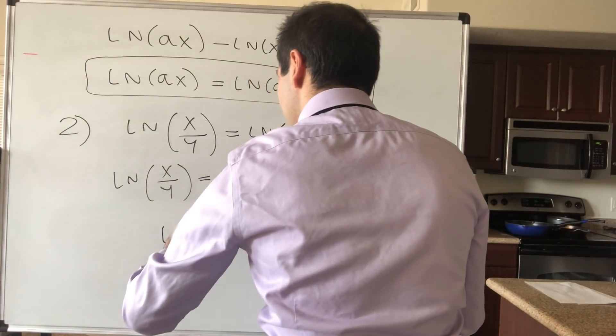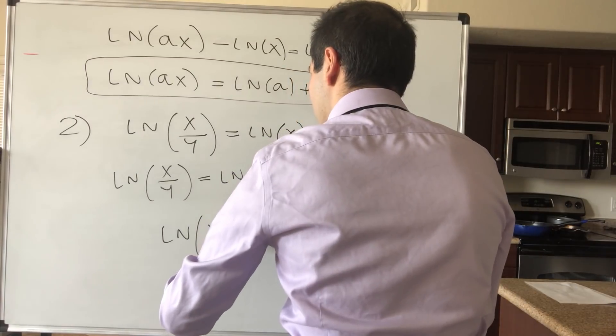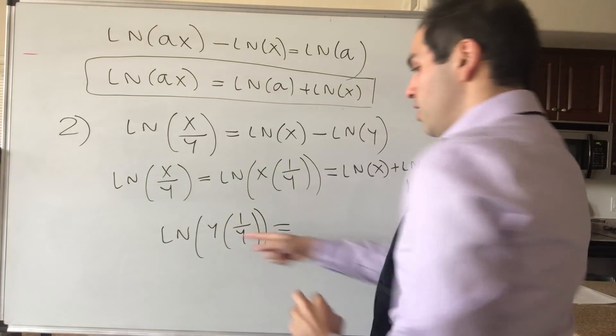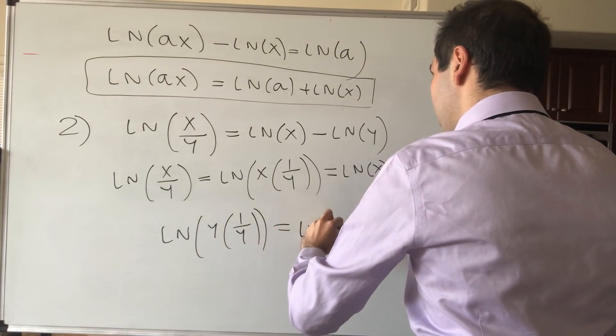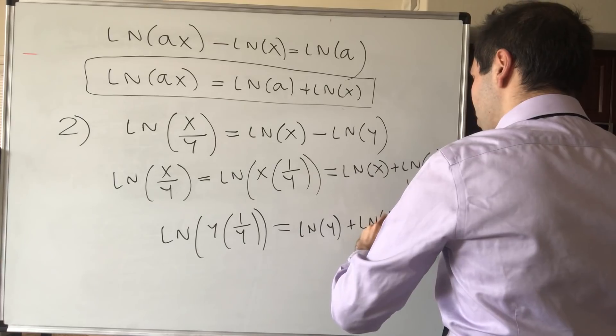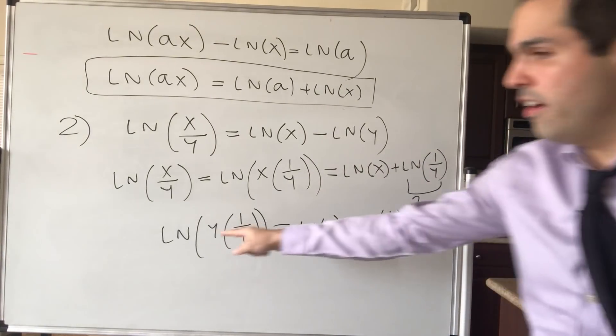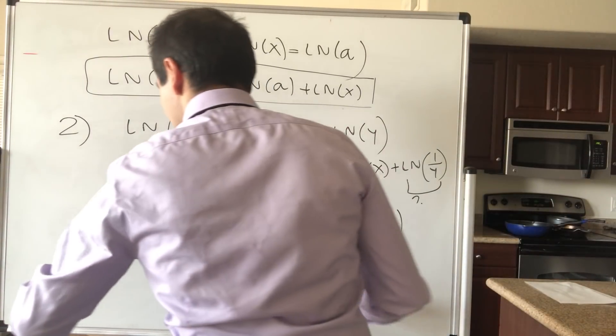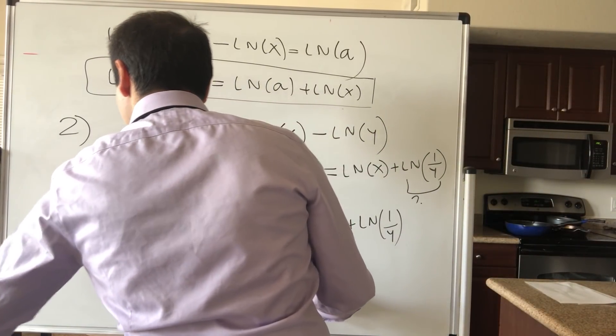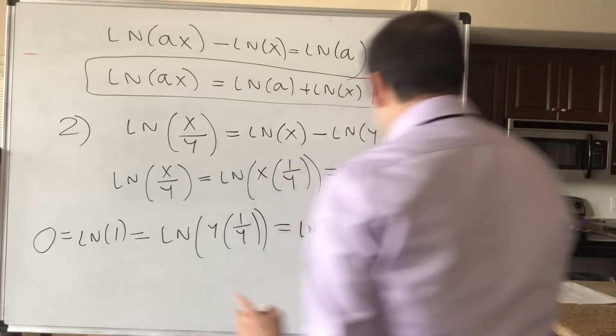Consider ln of y times 1 over y. On the one hand, this equals to ln of y plus ln of 1 over y. On the other hand, that's just ln of 1, which is 0. Going to the left, and that's 0.